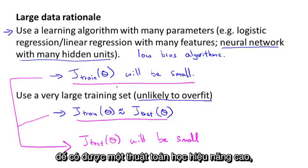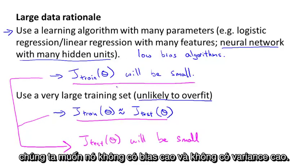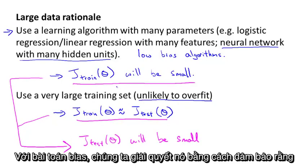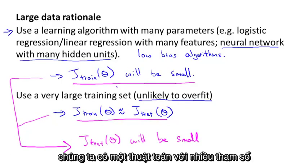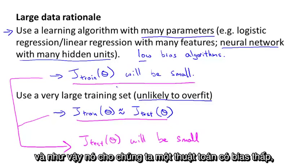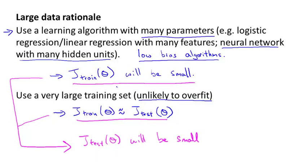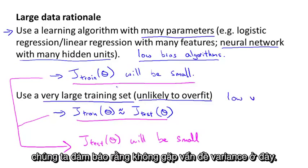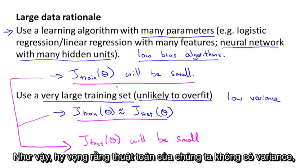Another way to think about this is that in order to have high performance learning algorithm, we want it not to have high bias and not to have high variance. So the bias problem we're going to address by making sure we have a learning algorithm with many parameters, and so that gives us our low bias algorithm. And by using a very large training set, this ensures that we don't have a variance problem either. So hopefully our algorithm will have low variance.